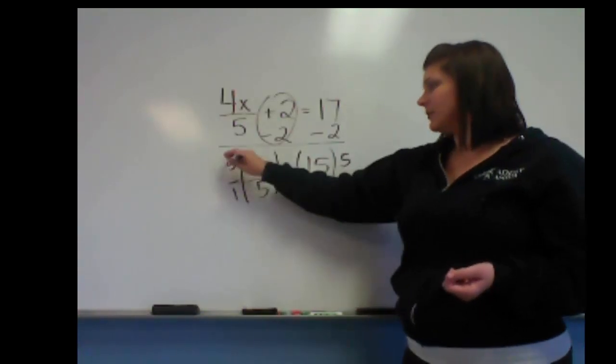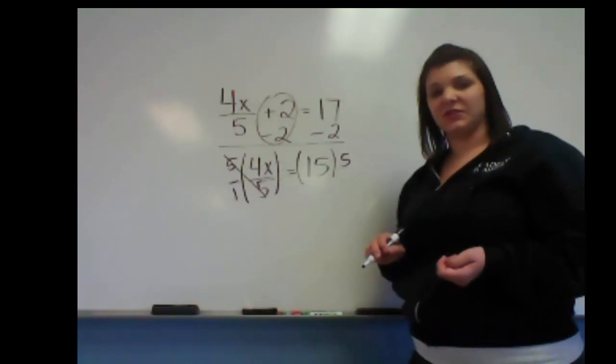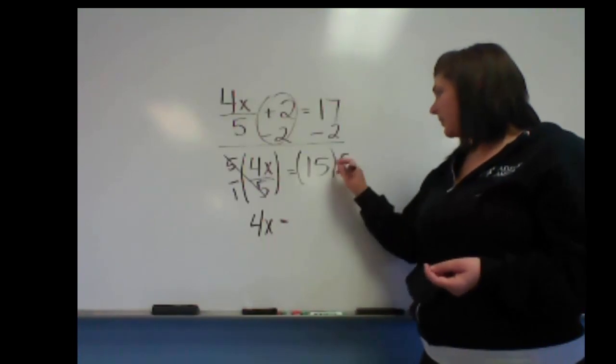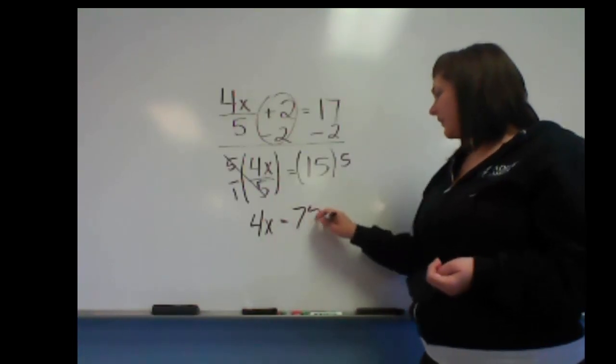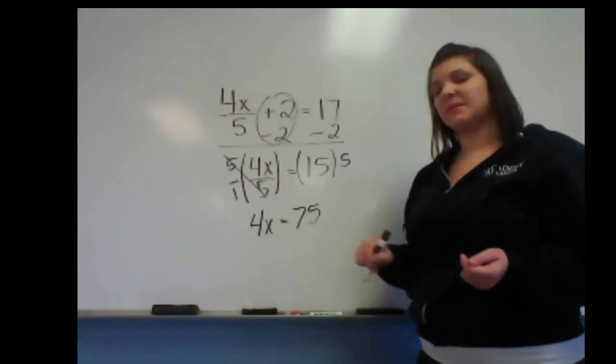5 over 1, or excuse me, 5 over 1 times 4x over 5. 5 over 5 is just a giant one. So we can be left with 4x equals, and we're going to get 75 on the right. Now it's just a one-step equation. All we had to do was eliminate that denominator.